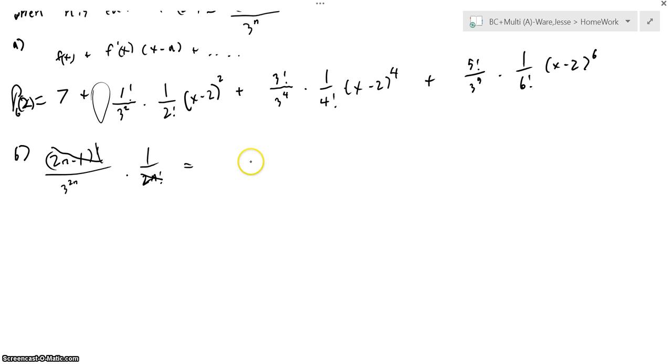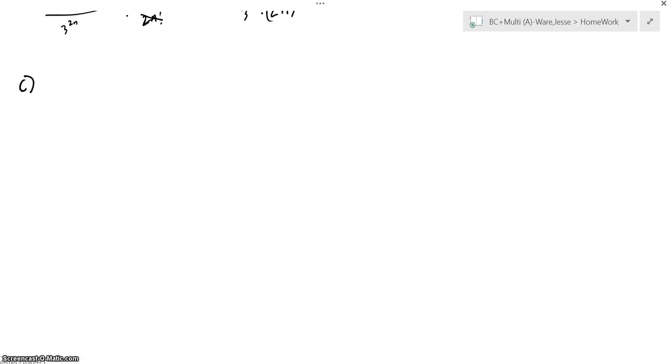Anyway, so you bring that all over, you end up with 1 over 3 to the 2n times 2n, and that is your answer to part B.